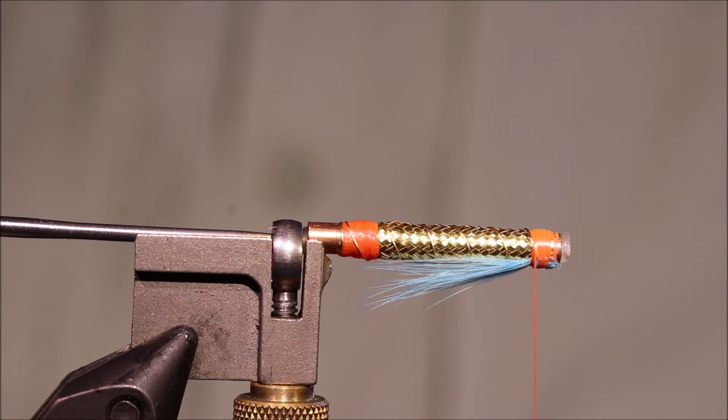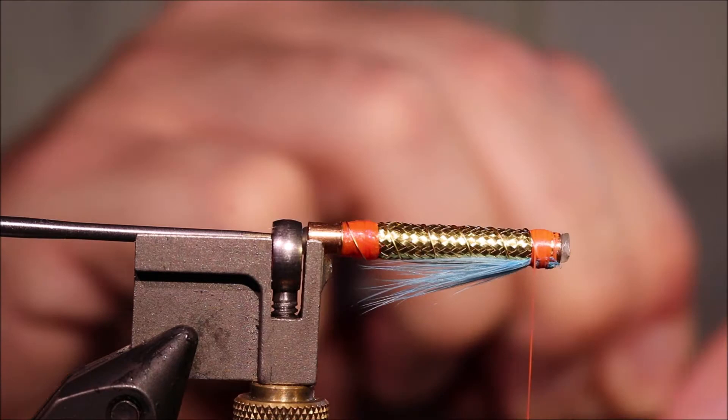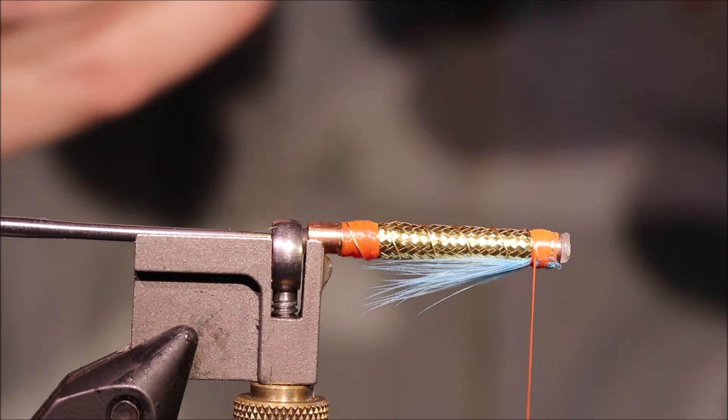The wing is orange bucktail. But again you can use a softer hair if you want, arctic runner or whatever. But bucktail does have a good bit of movement when it's in the water. I've got a good bunch here, just cleaning it out, taking away any short fibers that I don't need. It's a bit heavy.